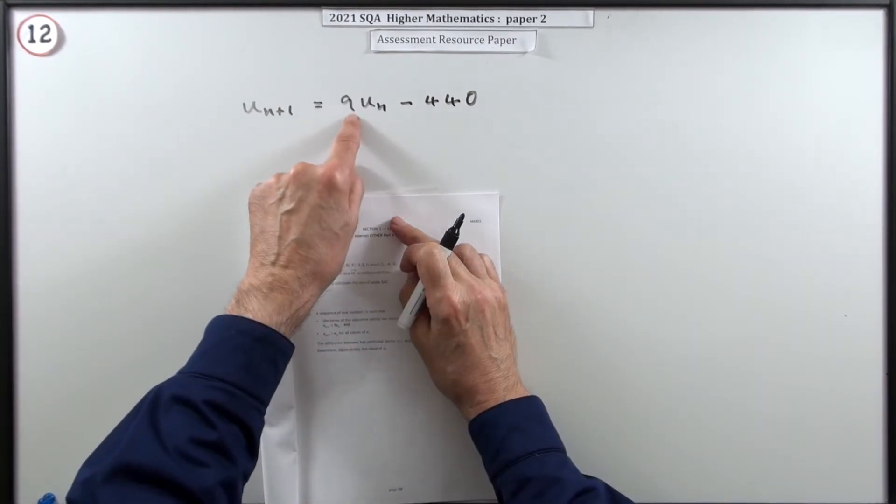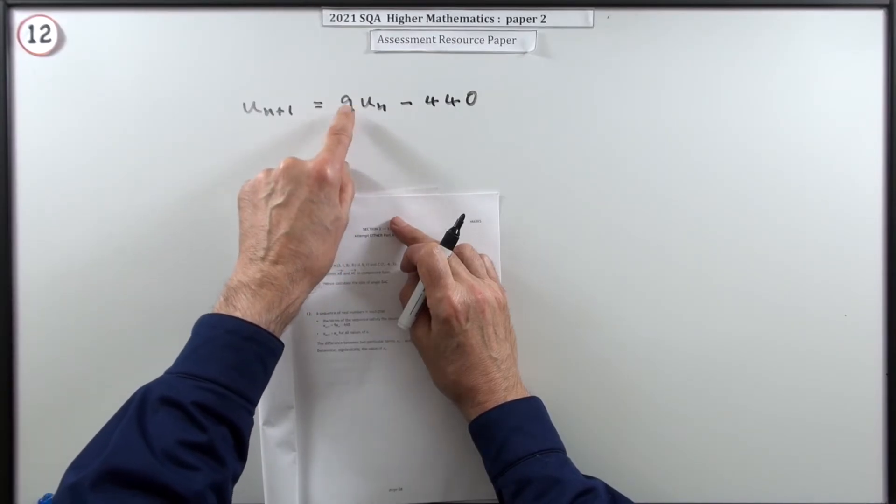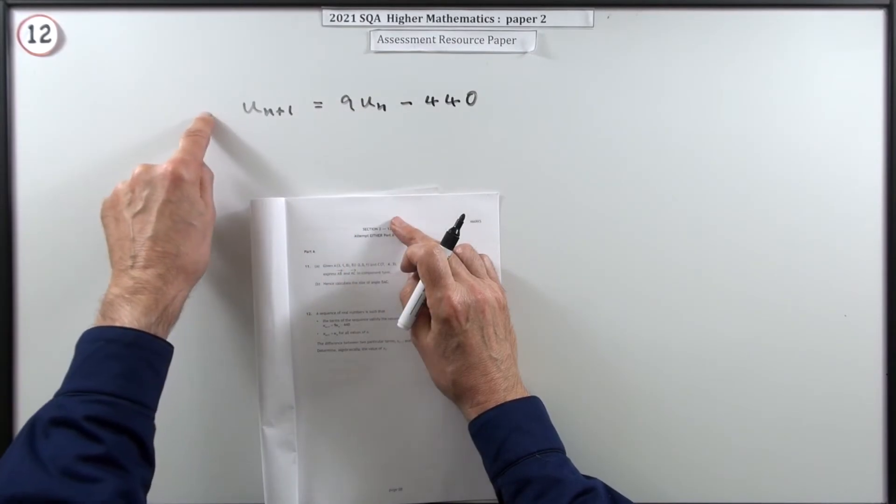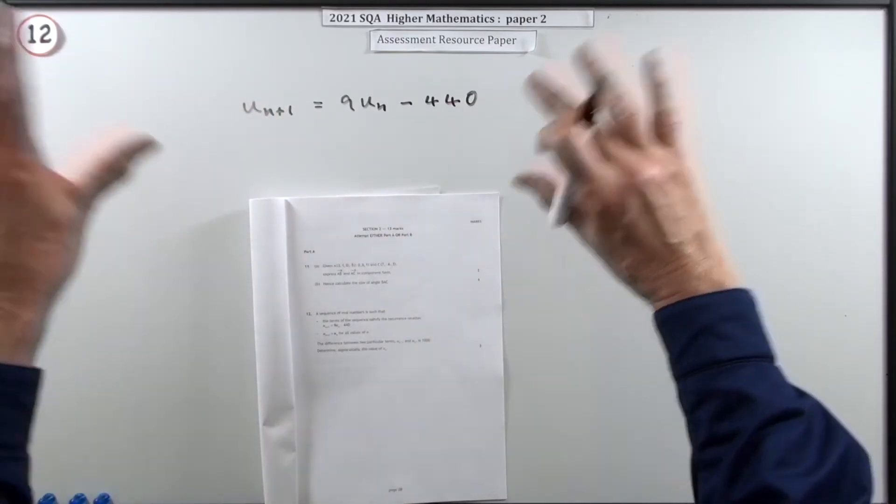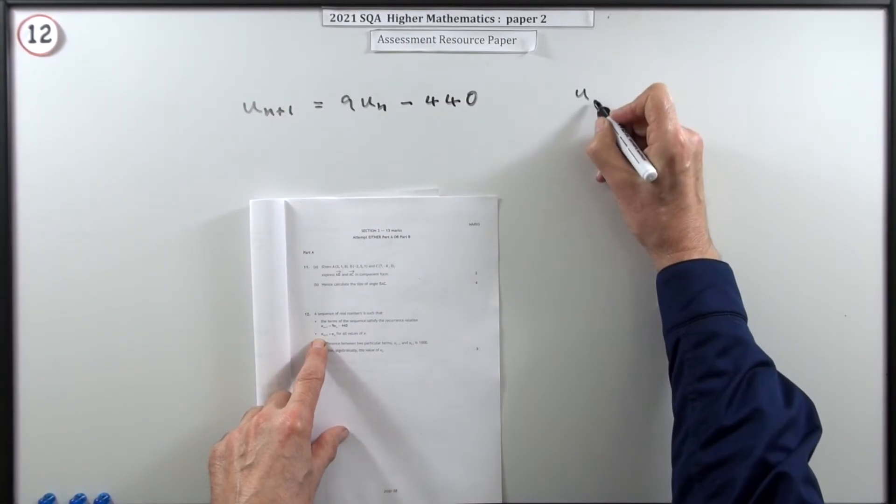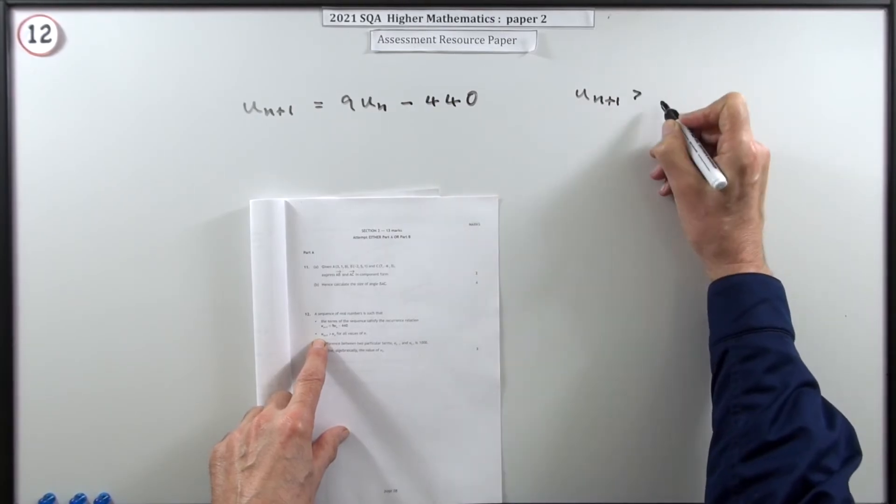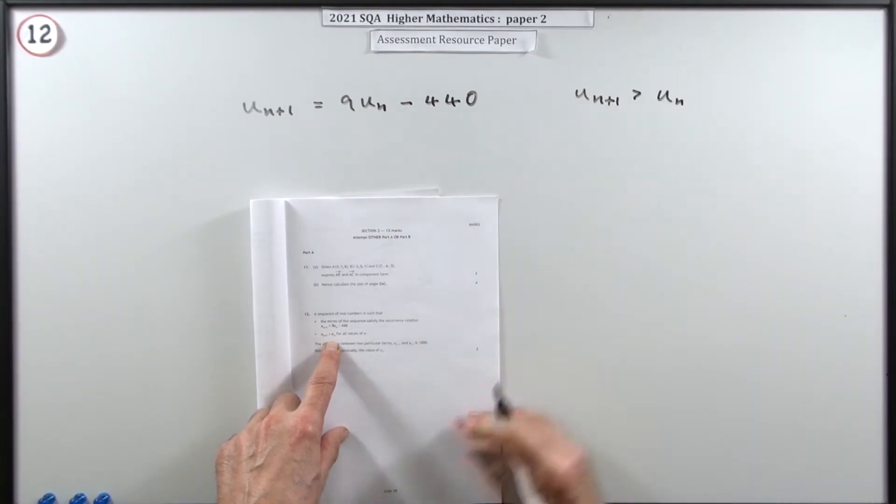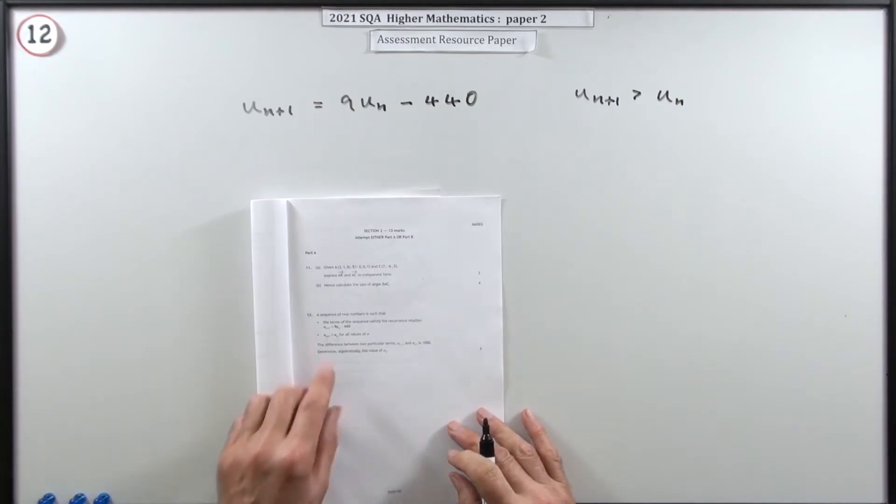One thing to notice here is that multiplying number that's greater than one, that's not a proper fraction, so there'll be no limit to this. This is just going to get bigger and bigger. In fact it says that in the second part. U_n+1 is always going to be greater than U_n, of course it will, because you're multiplying by something greater than one.